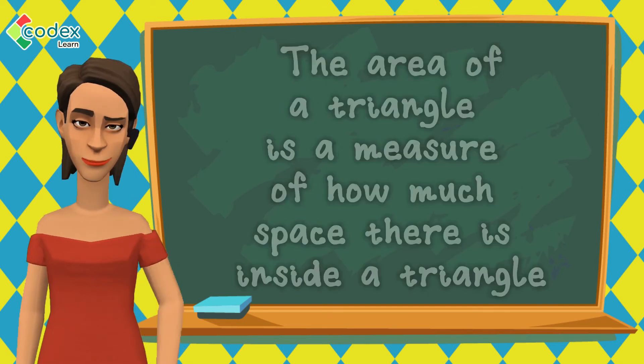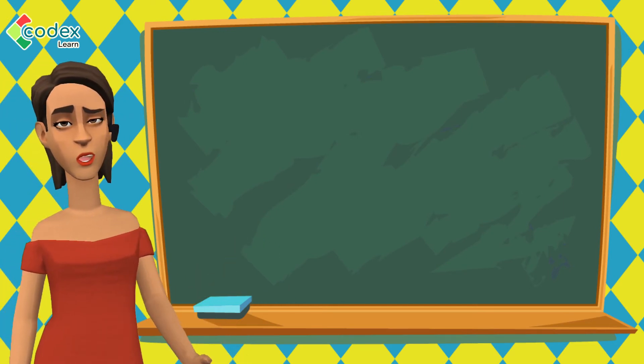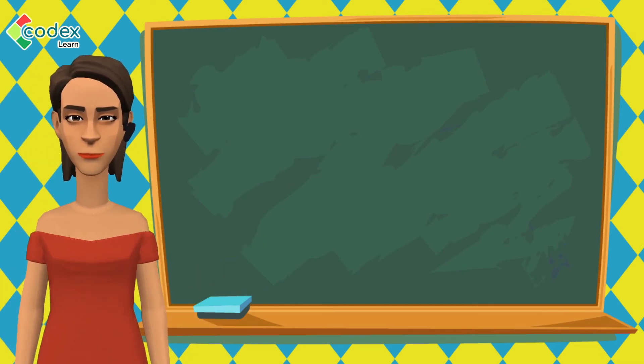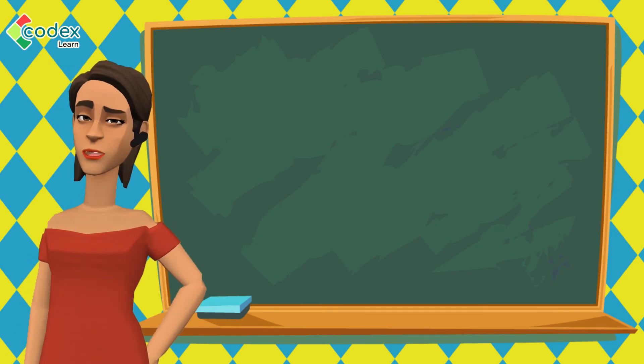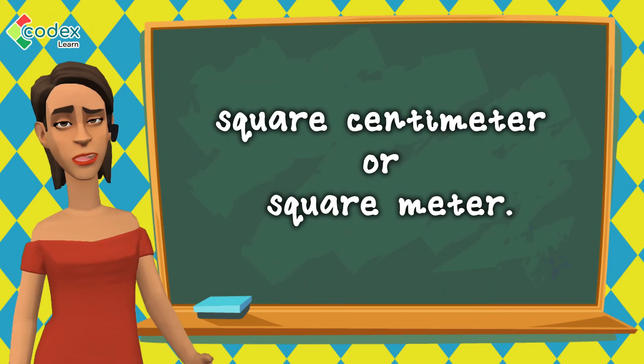But why do we need to find the area of a triangle? To know how big a triangle is, we measure its area. Remember, we measure the area of shapes with standard units of measurement, called square centimetre or square metre.